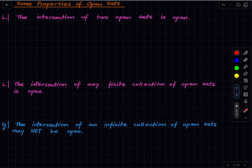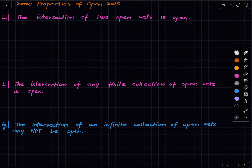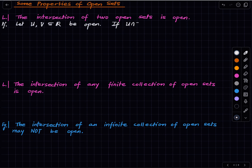Now there are some properties of open sets. The first property is that the intersection of any two open sets is open. Let us prove it properly. Let U and V be open subsets of ℝ. If their intersection is empty, then we are done, because the empty set is open by convention.